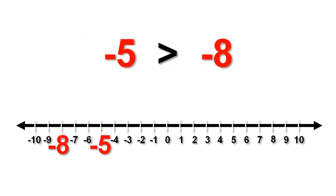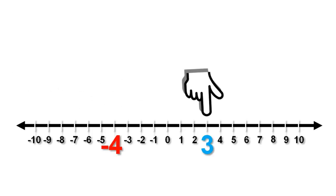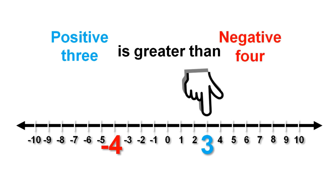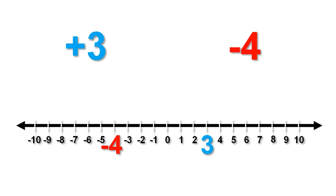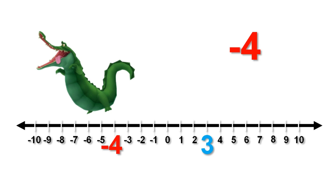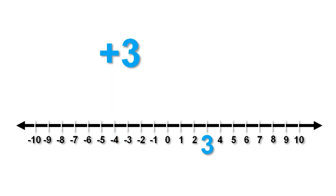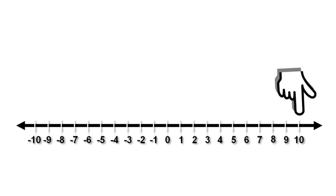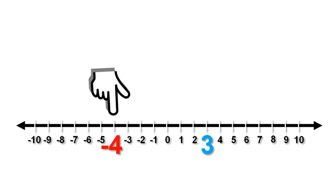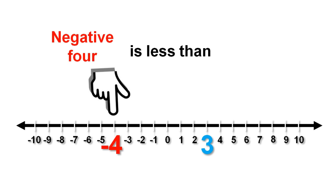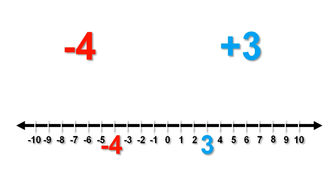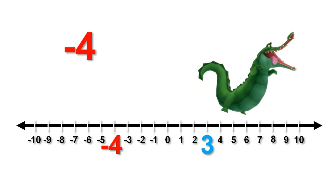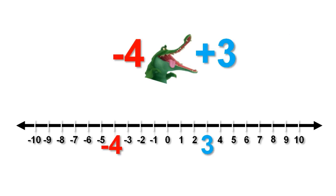One more set of numbers for us to compare: positive 3 and negative 4. Here they are on the number line. Positive 3 is further to the right than negative 4, so we can say that positive 3 is greater than negative 4. The greedy crocodile will help us write this out in a mathematical way — the greedy crocodile eats the bigger number, giving us the shape of the symbol. This says positive 3 is greater than negative 4. Negative 4 is further to the left than positive 3, so we can say that negative 4 is less than positive 3. Our greedy crocodile wants to eat the bigger number, giving us the shape of the symbol we need to use. This says negative 4 is less than positive 3.